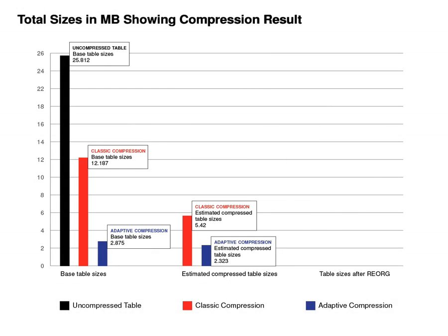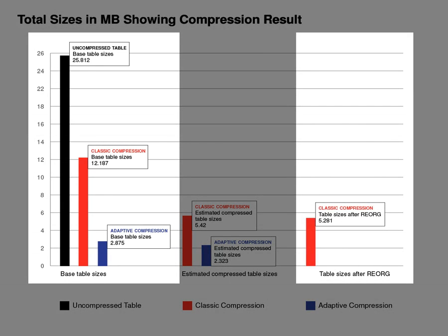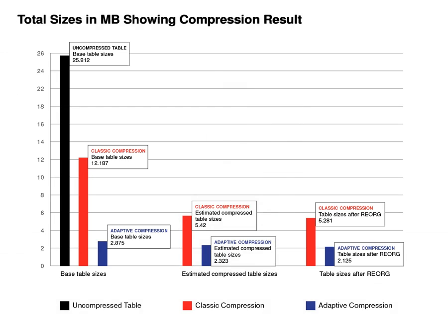Let's look at the effect of a table reorg operation. The table reorganization had a measurable effect on the size of the classic row compressed table, whereas the size of the table that used adaptive compression did not improve dramatically as a result of the reorg. This illustrates that adaptive compression retains a high compression ratio and lasts significantly longer. In addition, adaptive compression delays and possibly eliminates the need to perform offline reorgs.